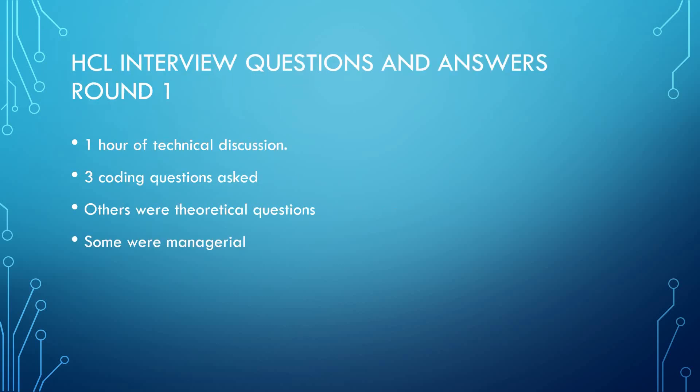Let us talk about the Actalent interview questions and answers. There were a total of two rounds. I am talking about the first round here. The first round consisted of one hour of technical discussion with the manager. In Actalent, there are many projects going on simultaneously and each project has its own managers. The senior-most manager or the project manager takes your interview. In this discussion, three coding questions were asked.